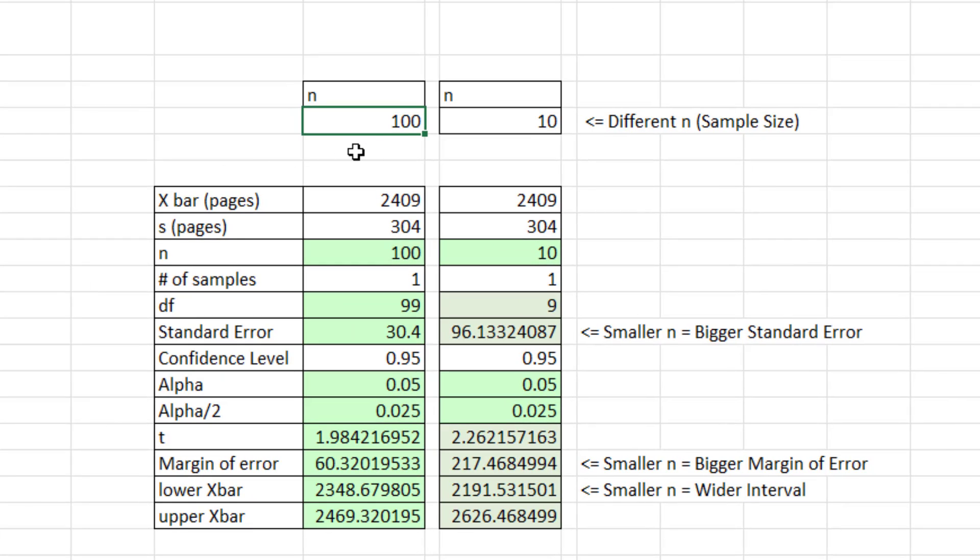Now off to the side is another example that illustrates what happens to the t-distribution when we change the sample size. We have the same sample mean and standard deviation. But here we have sample size 100, here we have sample size 10, much smaller. We can see if we calculate standard error. When n is smaller, we get a much bigger standard error. We also get a much bigger t, the number of standard deviations. So of course, when we multiply those, we're going to get a much bigger margin of error than we do with n equals 100. And then the lower and upper values are going to be much more spread out, yielding a wider interval.